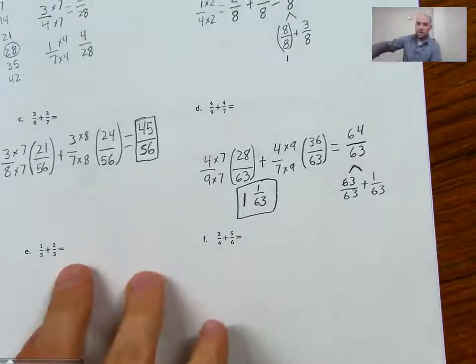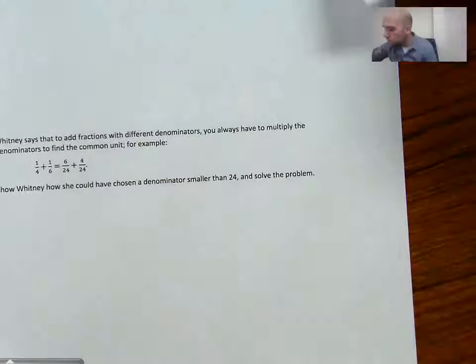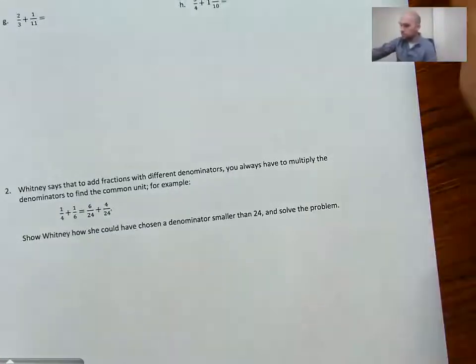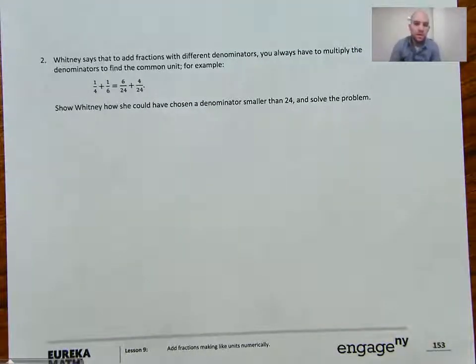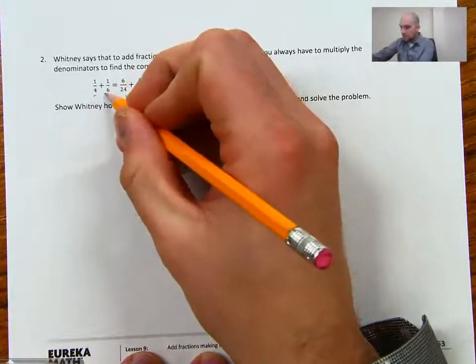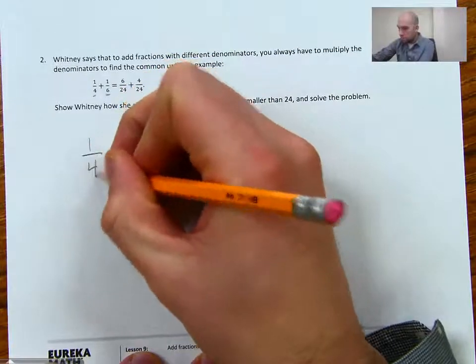All right. So let's move on to our next page here. And we're going to try a word problem. This one says, Whitney says that to add fractions with different denominators, you always have to multiply the denominator to find the common unit. For example, 1/4 plus 1/6 equals 6/24 plus 4/24. Show how Whitney could have chosen a denominator smaller than 24 to solve the problem.